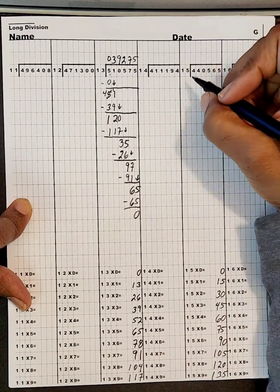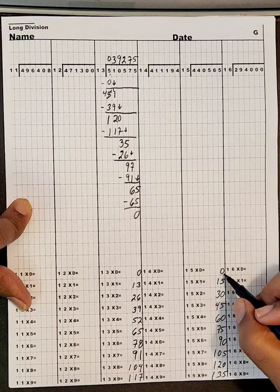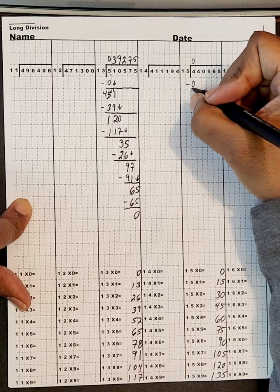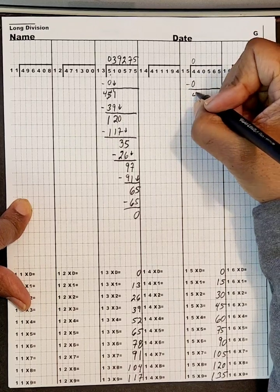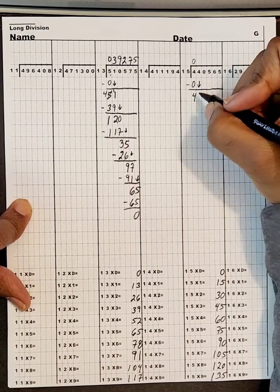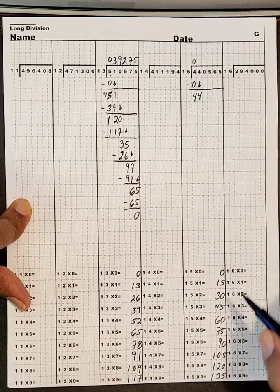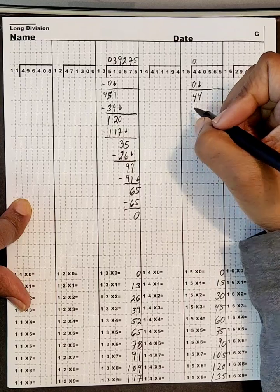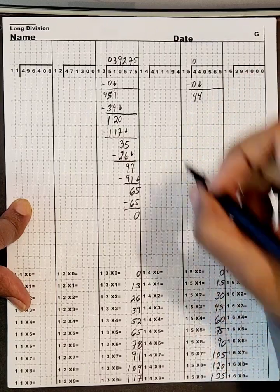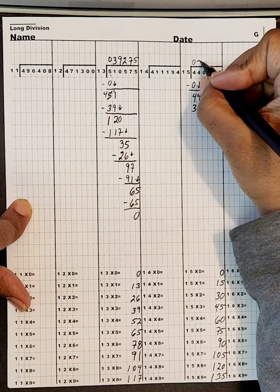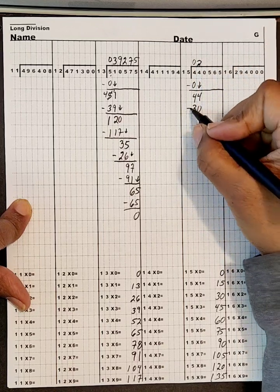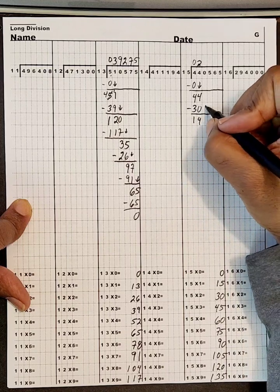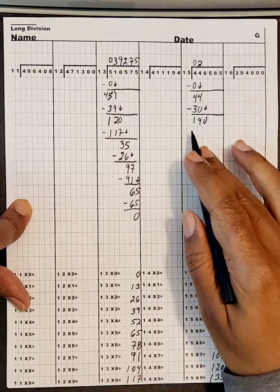Okay, let's start here. So the closest thing to 4 is 0. So we'll put 0 here and the multiplier is 0, so 0 there. Subtract and we get a 4. Now we bring down the other 4, and the closest thing to 44 would be 30. The multiplier is 2. So we got 30 here and 2 just above. Now we're going to subtract and we're going to get 14, and then we'll bring down the next number which is 0. So we have 140.